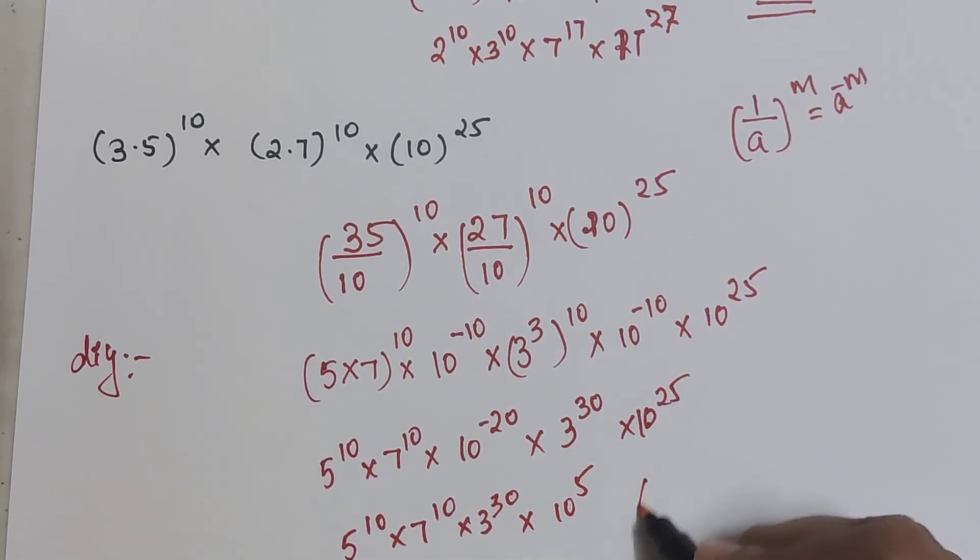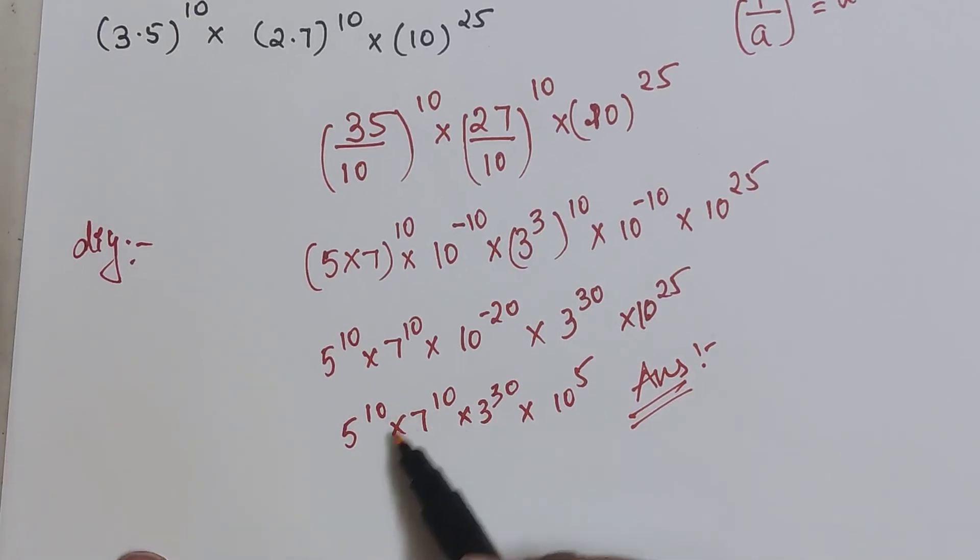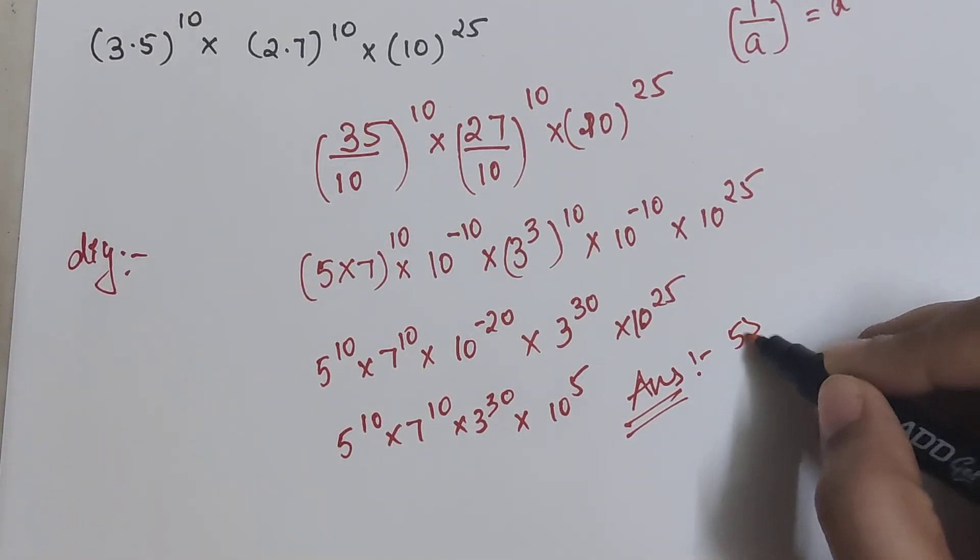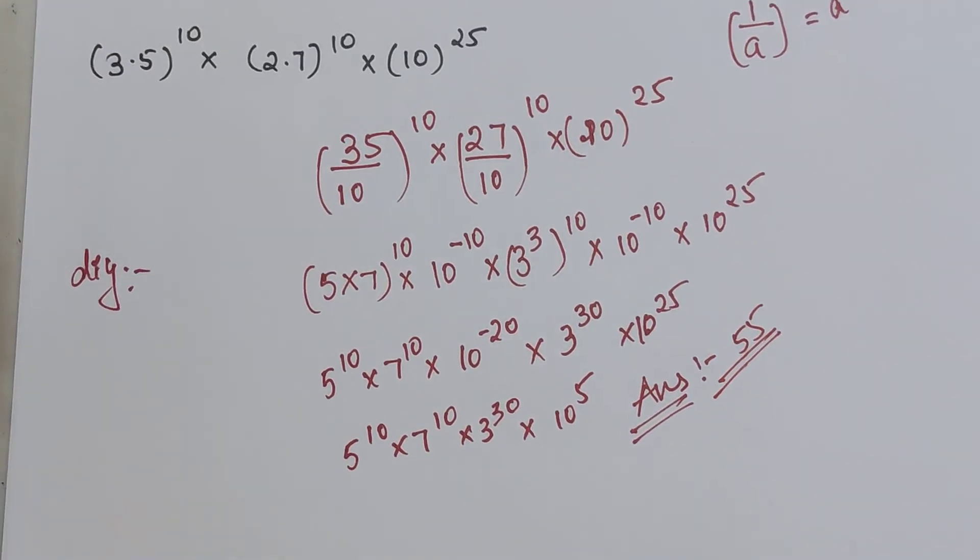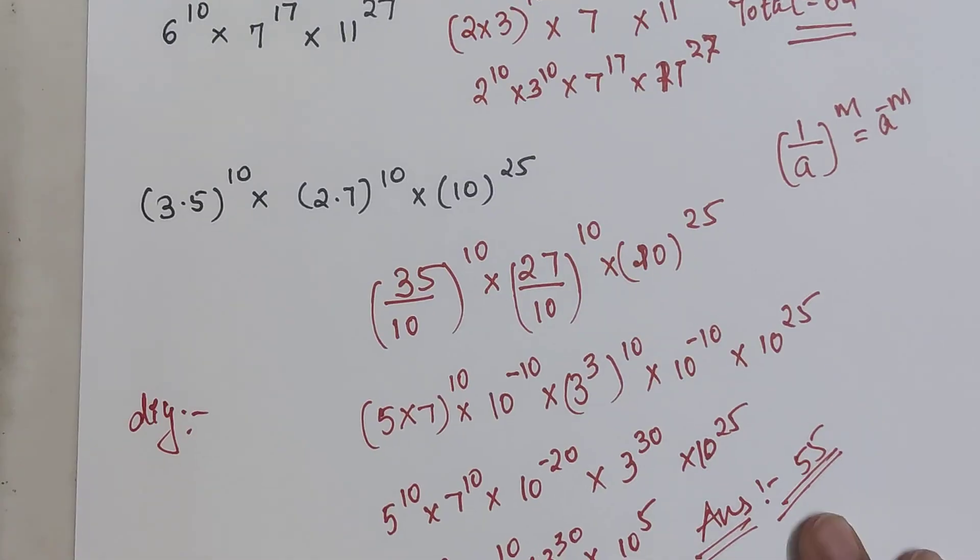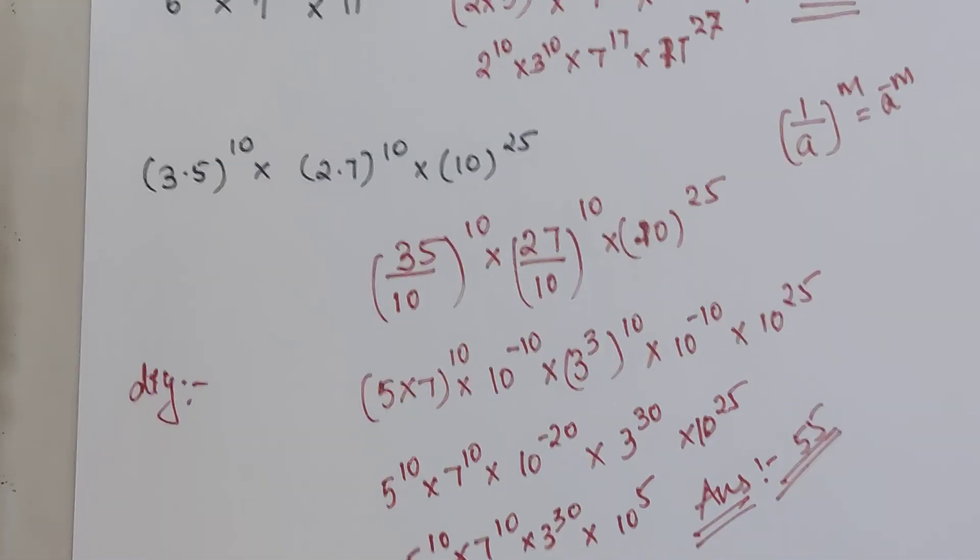So your final answer for this particular one would now come out to be 10 plus 10, that's 20, 20 plus 30 gets you 50, 50 plus 5 gets you 55. So that is the total number of factors, prime factors, for this particular question.